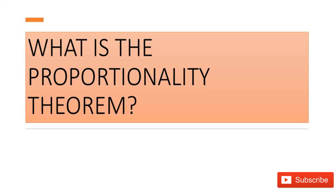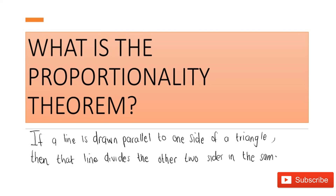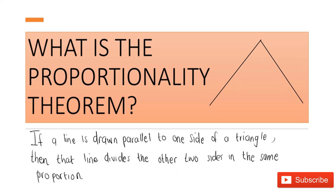So what is the proportionality theorem? The proportionality theorem states that if a line is drawn parallel to one side of a triangle, then that line divides the other two sides in the same proportion. Let's use a diagram to understand this. If you have a triangle and a red line drawn parallel to one side of it, this theorem says that line divides the other two sides in the same proportion.